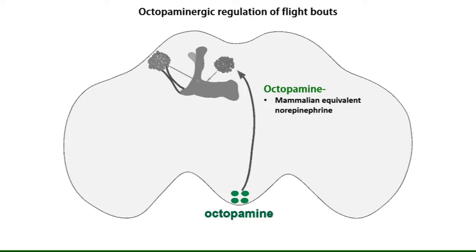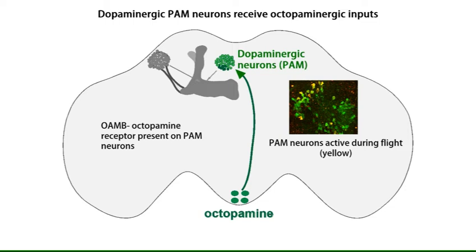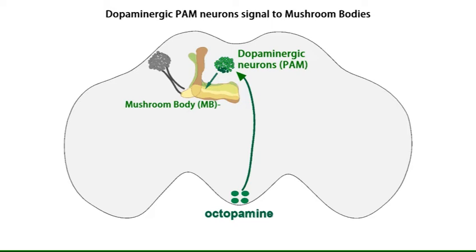The octopaminergic neurons connect to a group of dopaminergic neurons called the protocerebral anterior medial, or PAM neurons. We show that a subset of PAM neurons are active during flight. It is well established that PAM neurons release dopamine and modulate synaptic function in a higher brain center called the mushroom body.